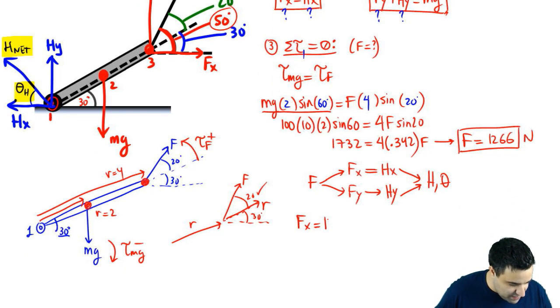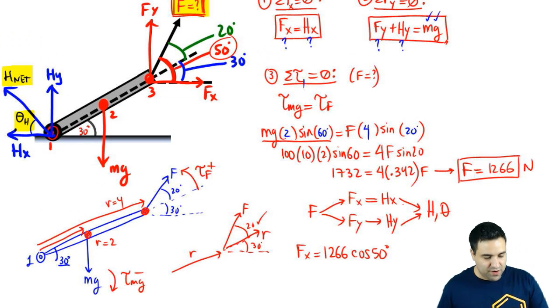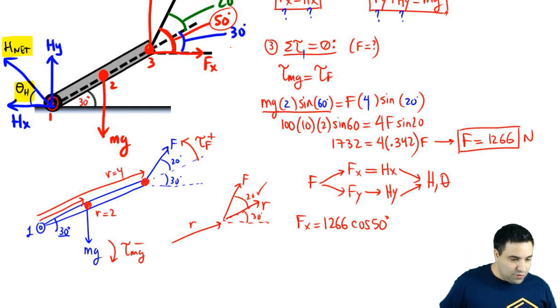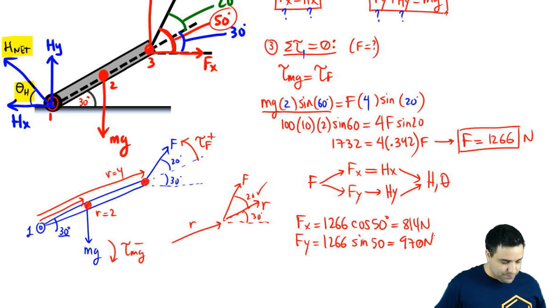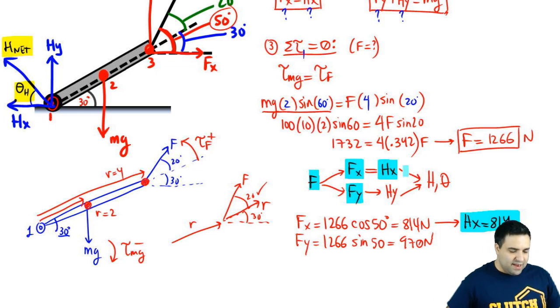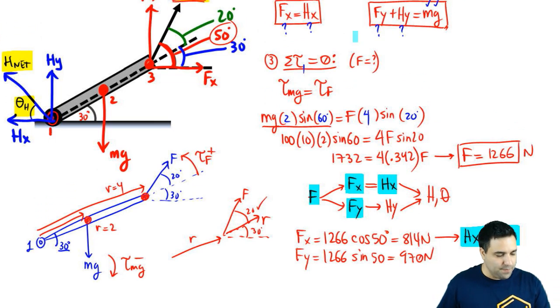So how do I find Fx? Fx is just F cosine of theta. So it's 1266 cosine of 50, because the angle, you have to be very careful. You have the angle for F is 50. And if you do this, I have Fx is 814 Newtons. Fy is 1266 sine of 50, which is 970 Newtons. This is the same as Hx, so I can say Hx is 814. So I know F, I know Fx, Fy, I know Hx, and I have to get Hy using this equation up here.